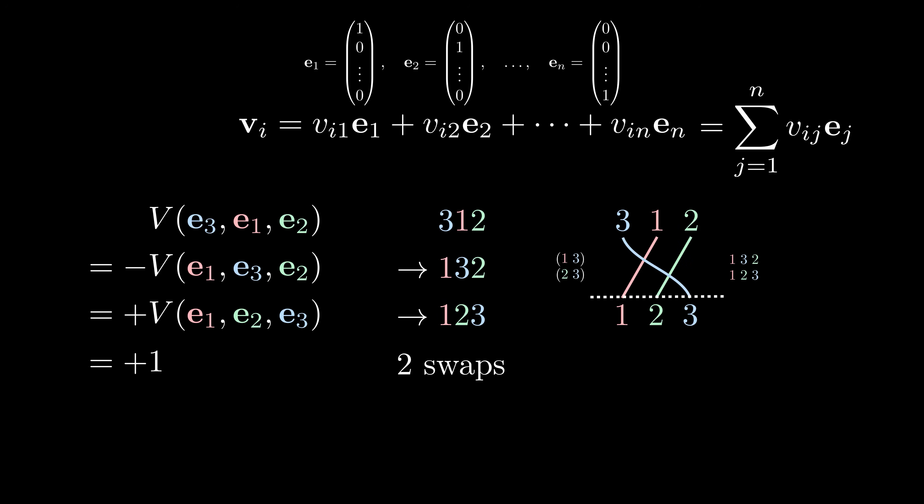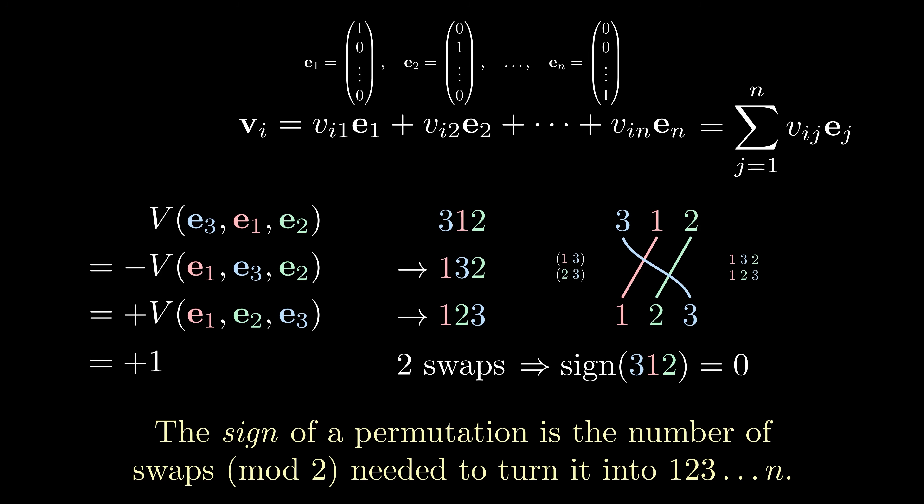Anyway, we see that what matters is whether the number of swaps is even or odd, and so we define the sign of a permutation to be the remainder modulo 2 of this number of swaps. As we've just seen, this is also the number of crossings in our braid diagram. In this example, the sign of 3, 1, 2 is 0, since we used an even number of swaps.